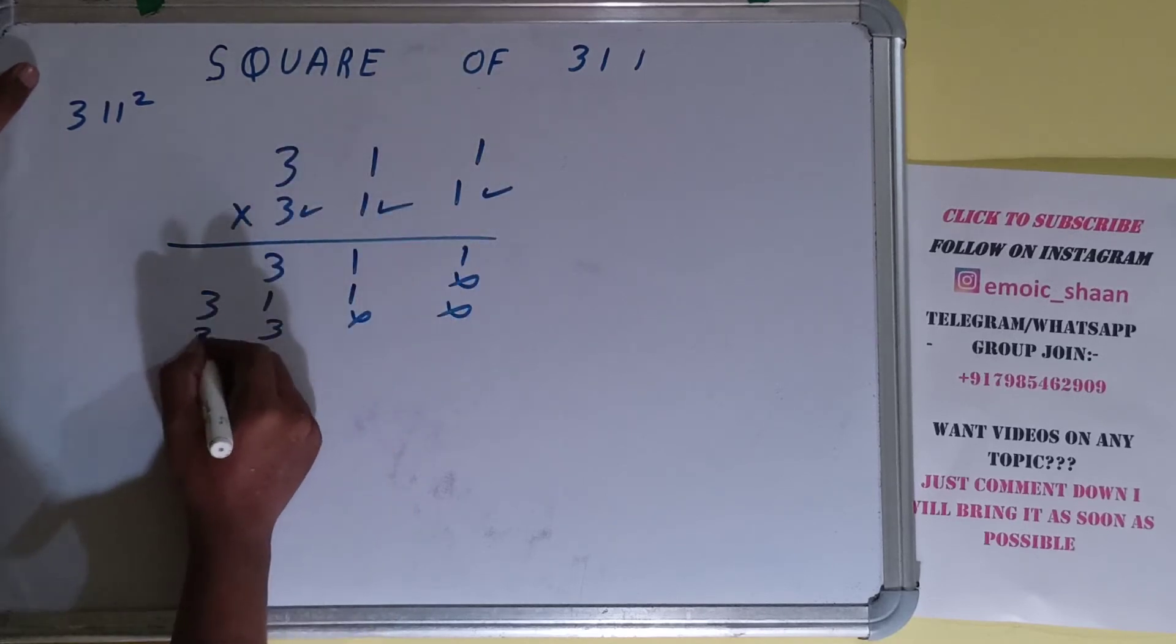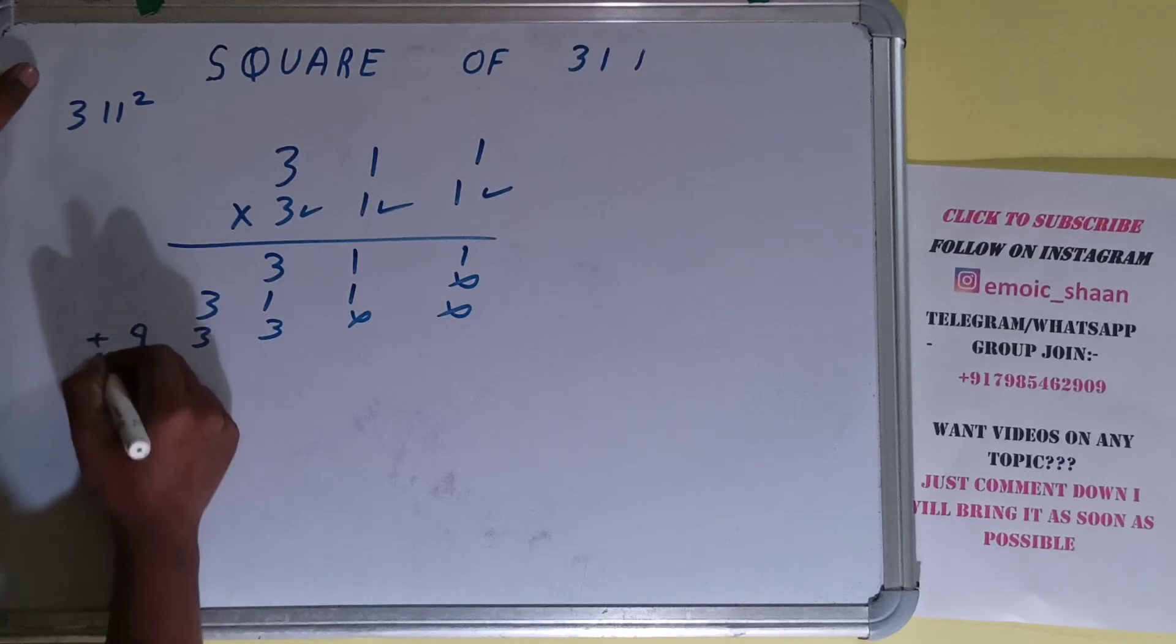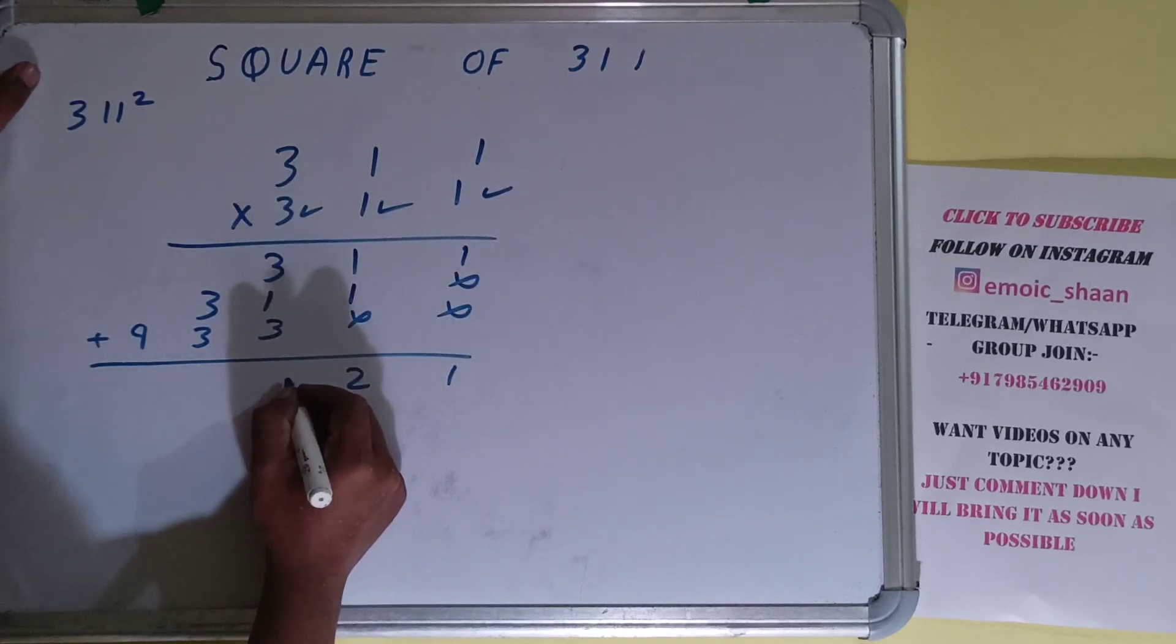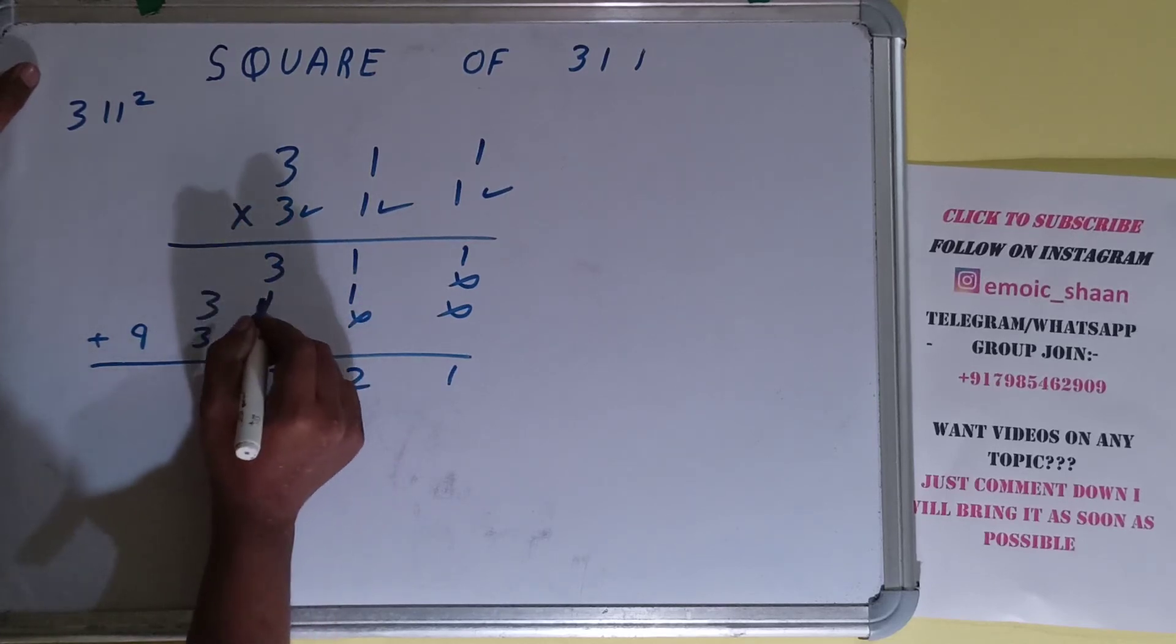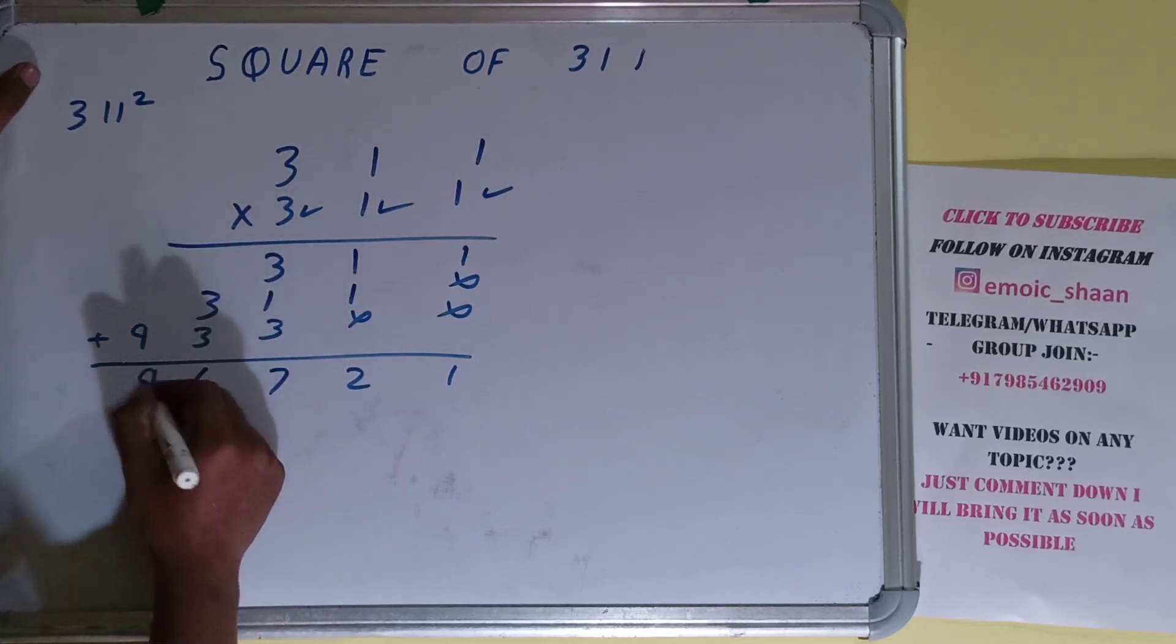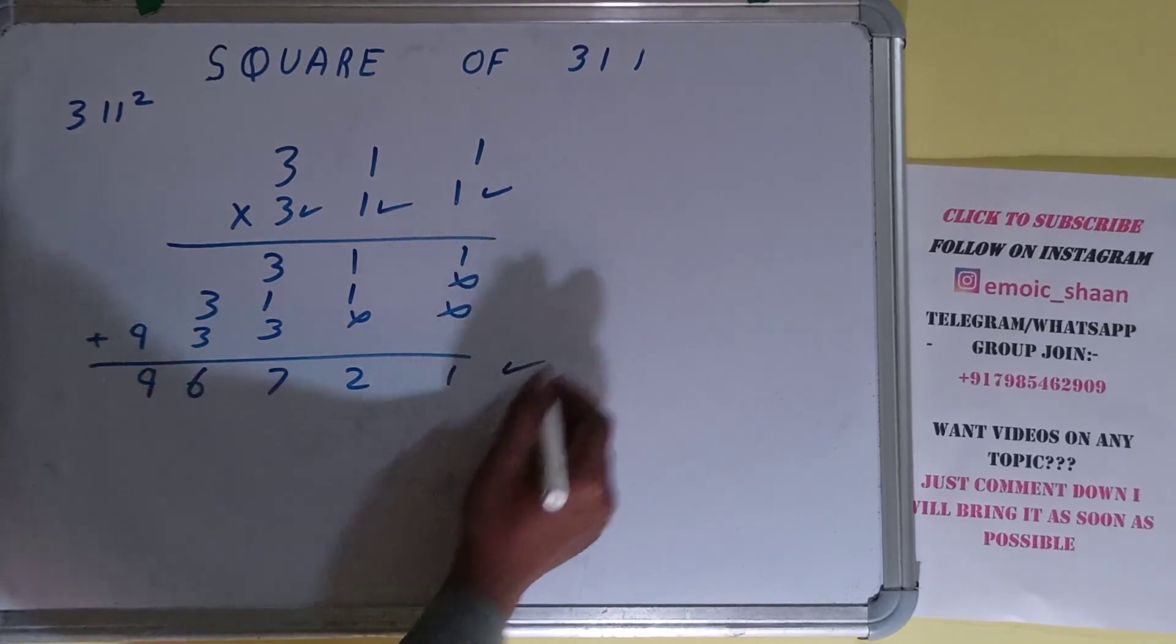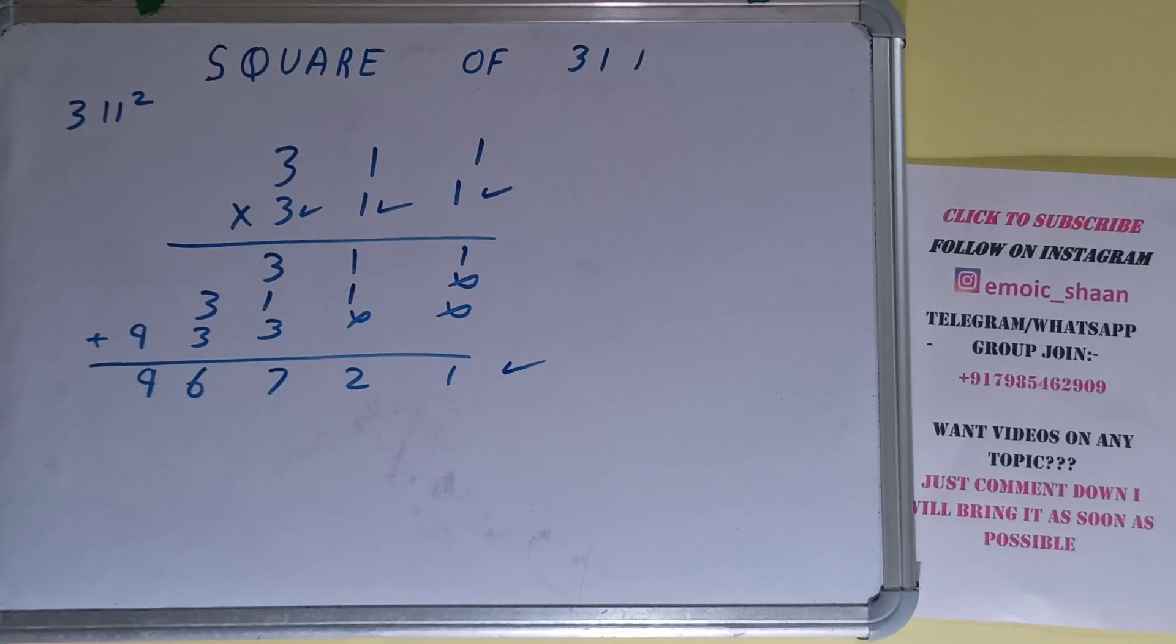Three ones are three, and three threes are nine. Just add everything carefully: one, two, three, plus three, seven, six, nine. So your answer will be 96,721. That will be the square of the number 311.